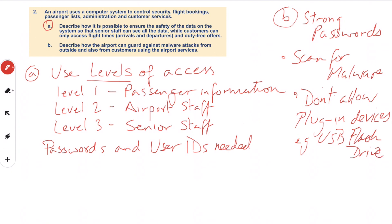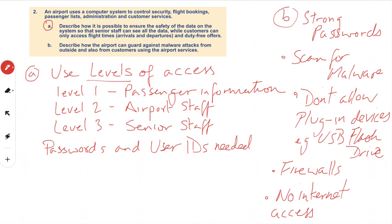We could also set up a firewall. If there is internet access on any of the computers, we obviously want to protect them from malware getting in — so virus checkers and malware scanning. We could also set up a system where there is no internet access at all, which might be a lot more beneficial. Do the computers in the airport actually need internet access? Possibly not.